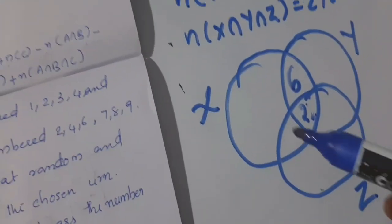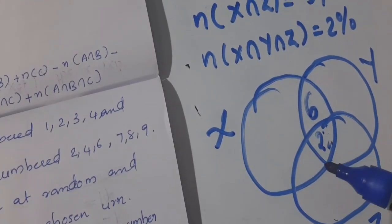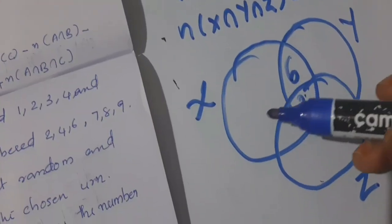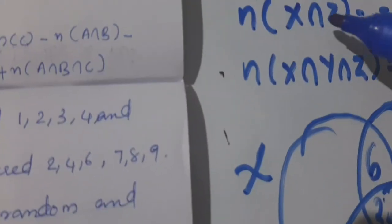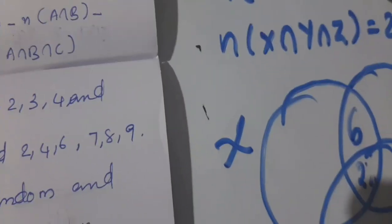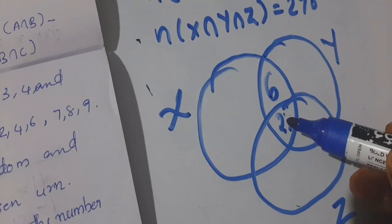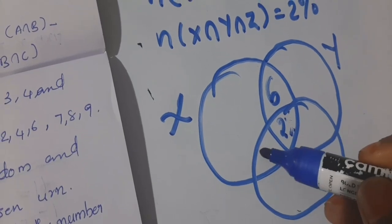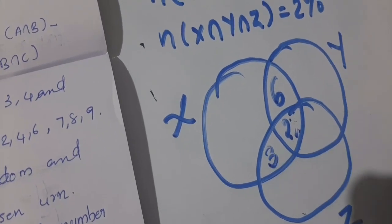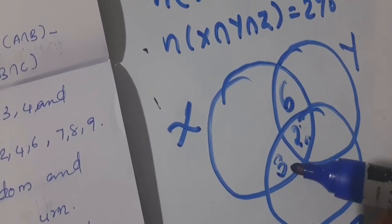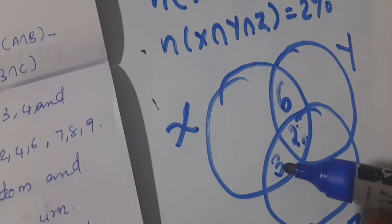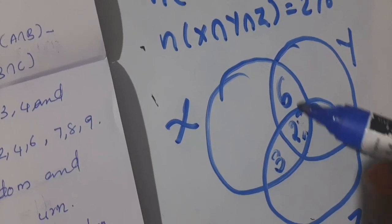Similarly, the X and Z intersection region: the remaining portion is 5% − 2% = 3%. Then the total regions related to X sum: 6 + 3 = 9, plus 2 = 11.